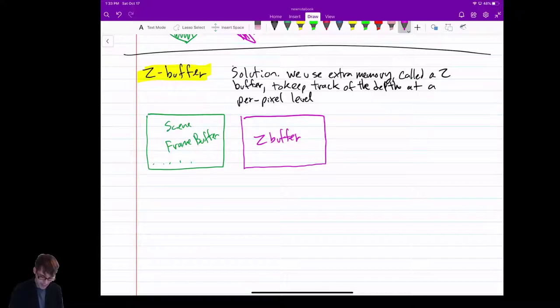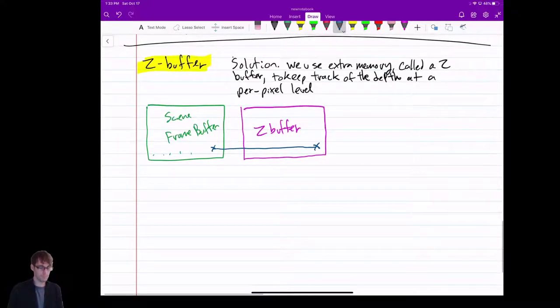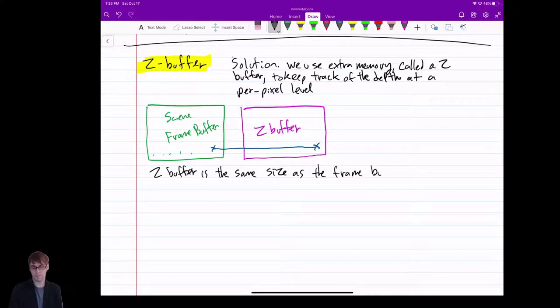And the key is that for any given pixel, if they have a pixel here, there's a corresponding entry in the Z Buffer. So the Z Buffer is the same size as the frame buffer and has one entry per pixel.